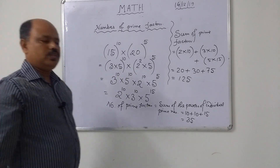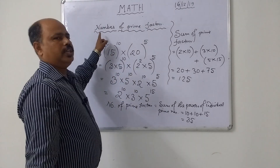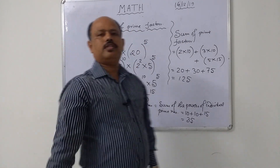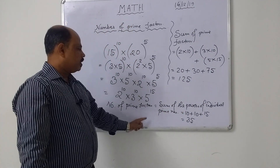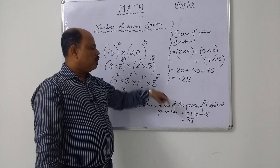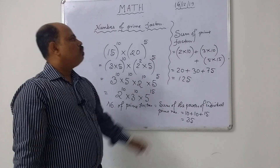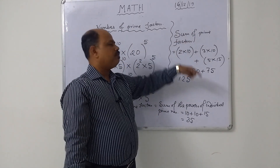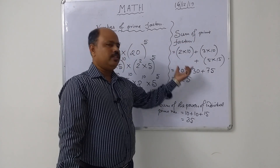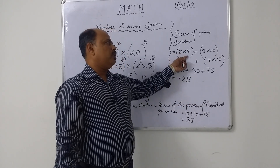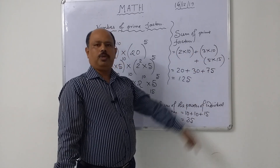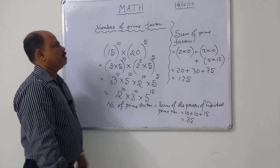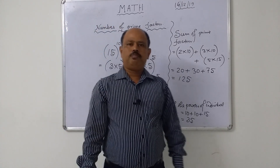So there are two questions. First: number of prime factors — how many prime factors does that expression have? The answer is 35. And also: what is the sum of prime factors of that expression? The sum of prime factors is found as base into power, plus base into power, plus base into power, and the answer is 125.